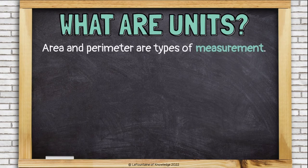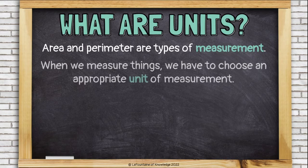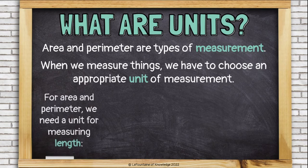Area and perimeter are types of measurement, and when we measure things, we have to choose an appropriate unit of measurement. For area and perimeter, we need a unit for measuring length.